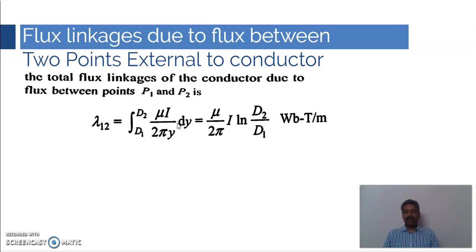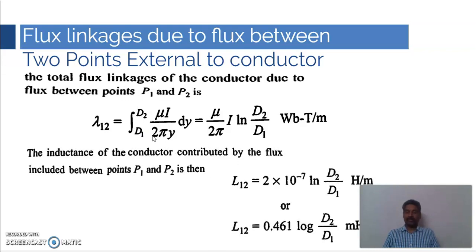To generalize this for flux existing from the surface of the conductor to any point D meters away, we replace D1 with R (the surface of the conductor) and D2 with D (a generalized external point). This allows us to calculate flux linkages due to flux at any point outside the conductor. From the λ₁₂ expression, we can also calculate inductance.